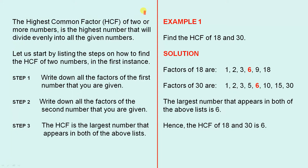Let us start by listing the steps on how to find the HCF of two numbers. Step 1: write down all the factors of the first number. Step 2: write down all the factors of the second number. Step 3: the HCF is the largest number that appears in both of the above lists.